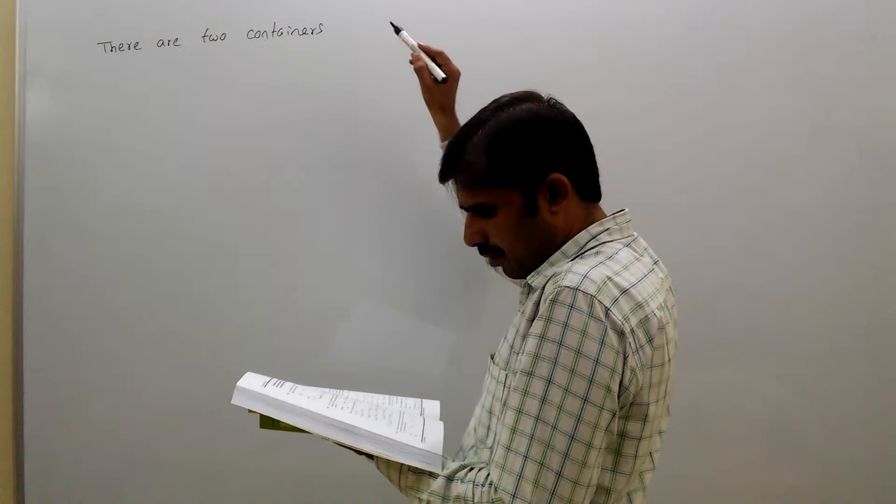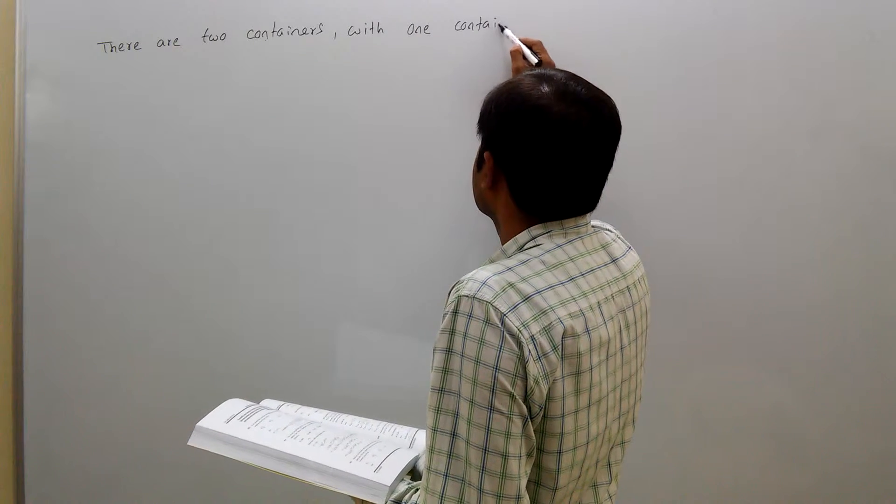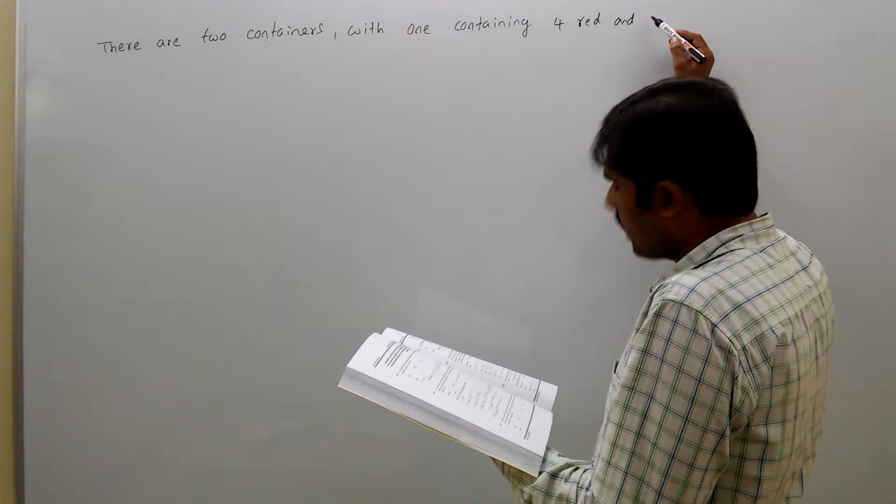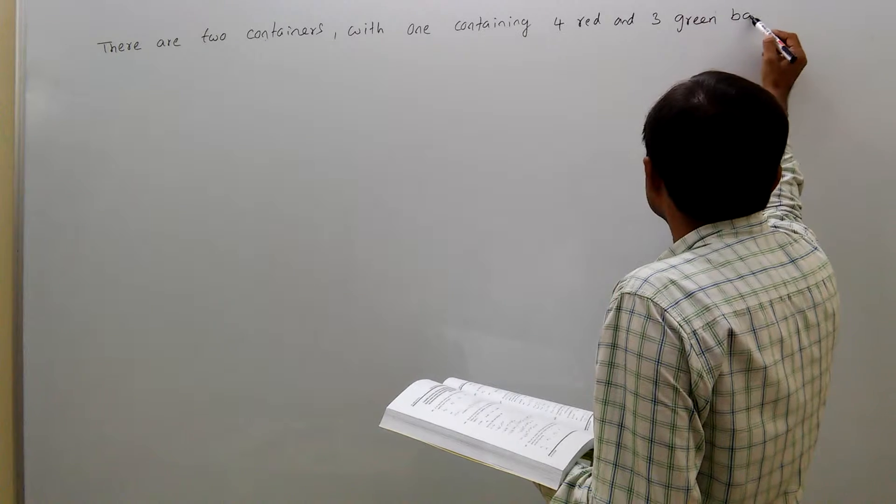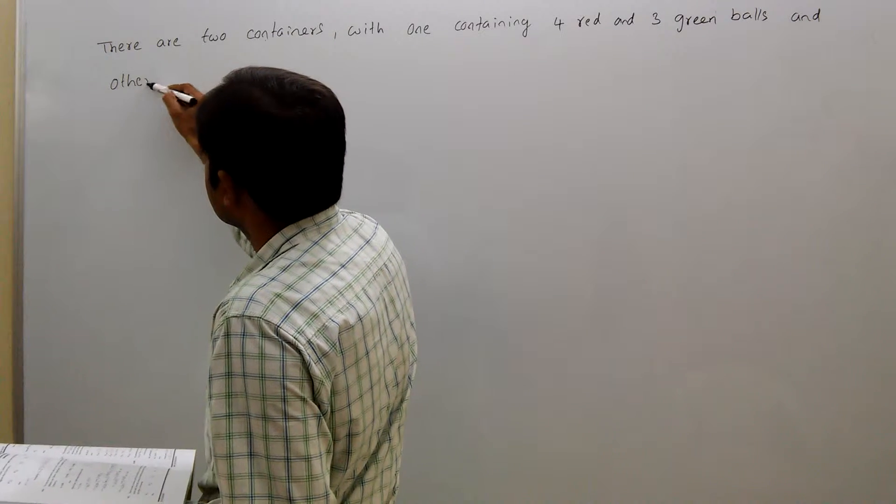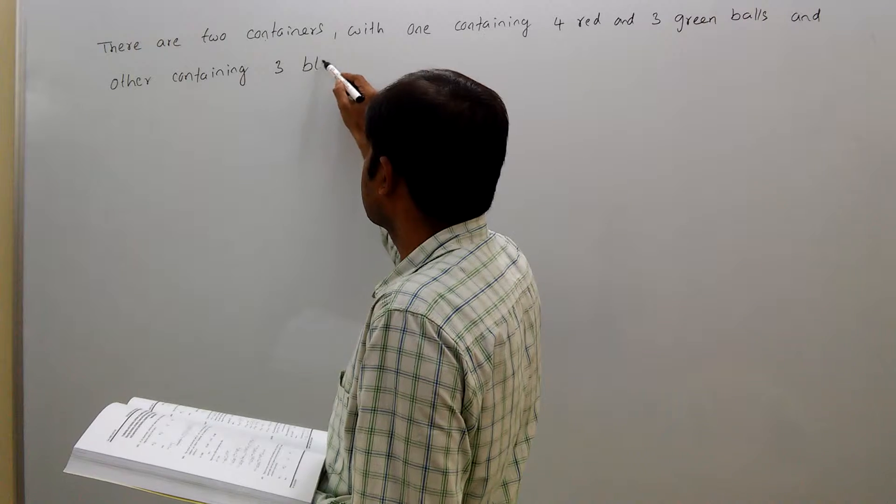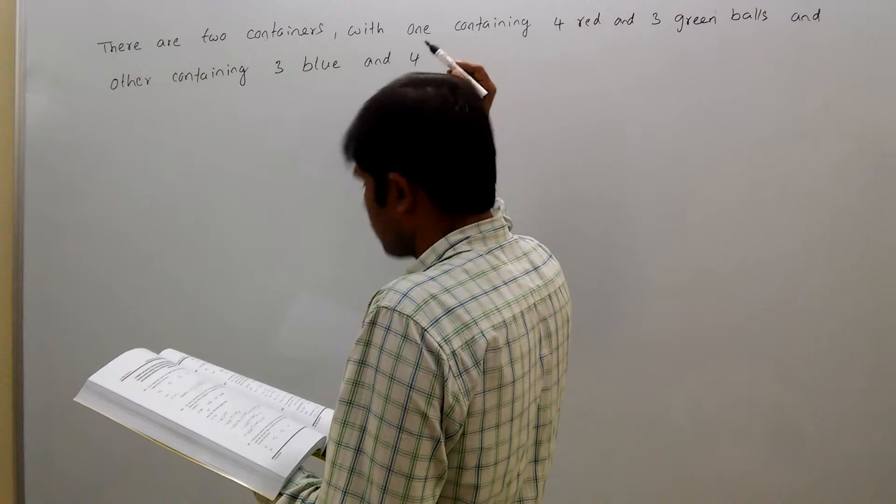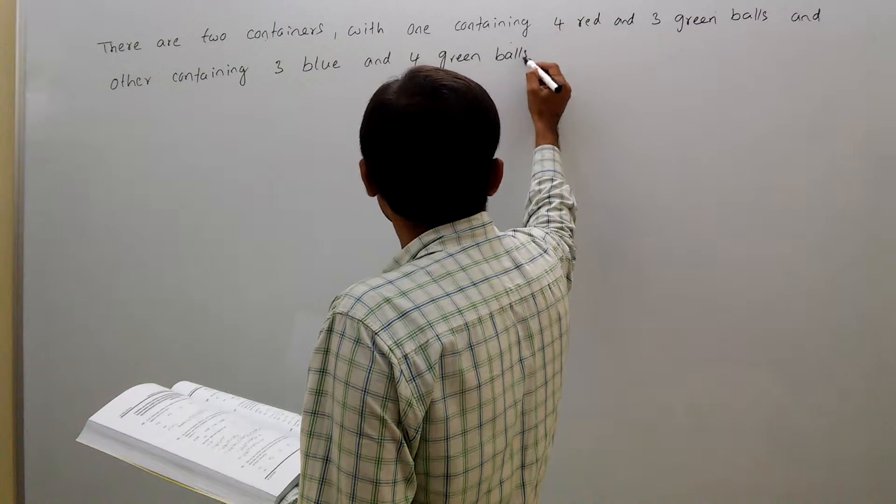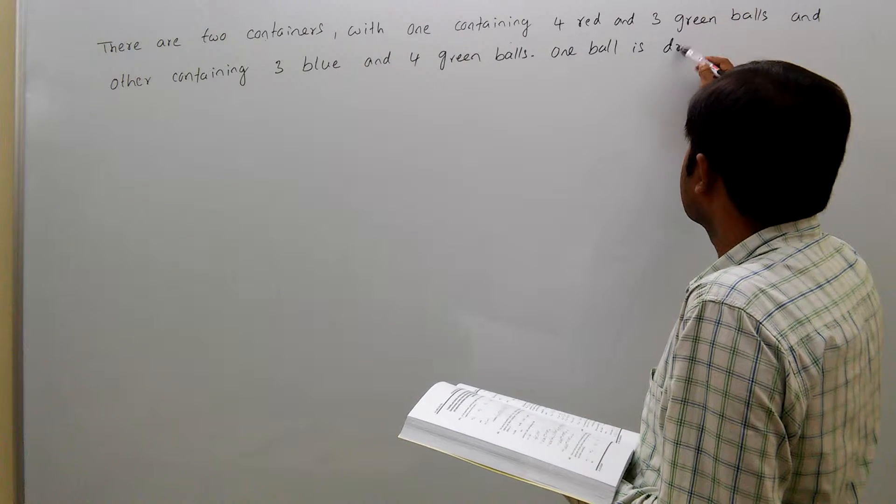There are two containers, one containing four red and three green balls, and the other containing three blue and four green balls. One ball is drawn at random from each container.